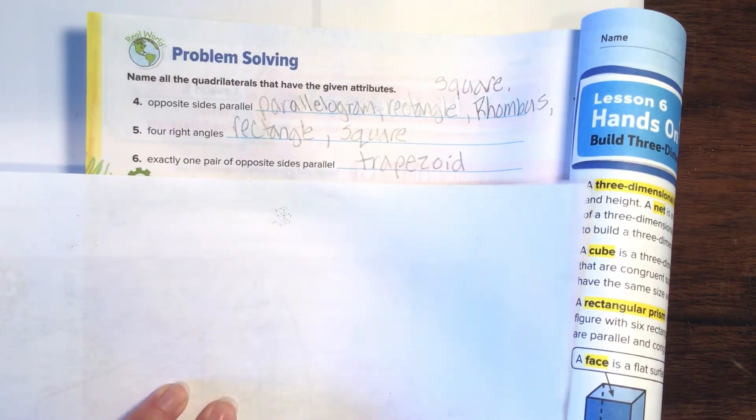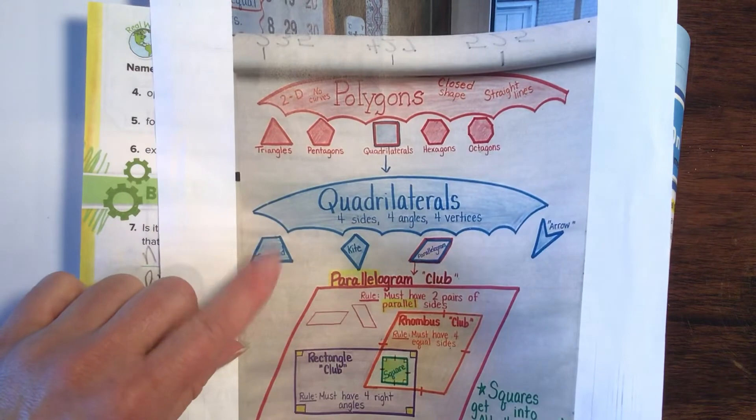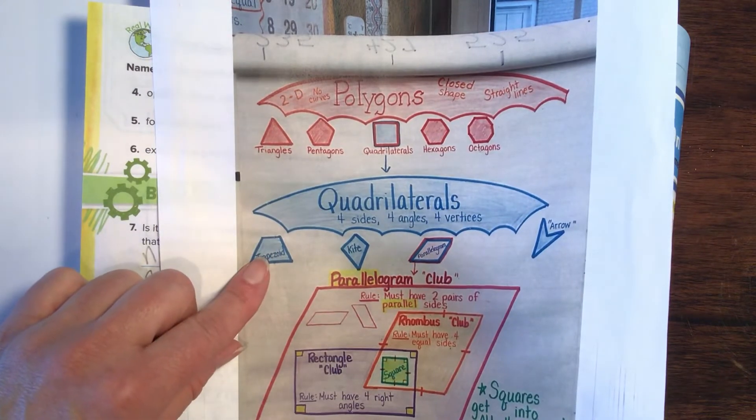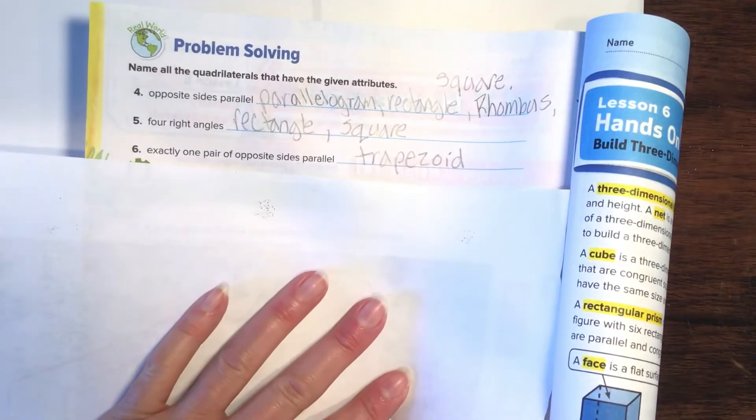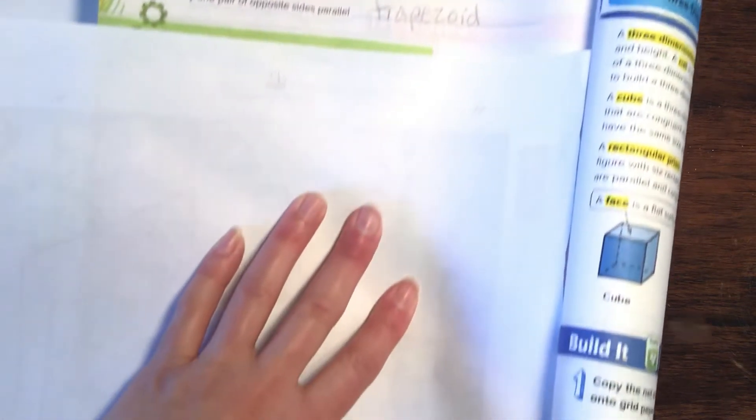Number six. Exactly one pair of opposite sides parallel. That's our fun little trapezoid. Remember, he's clear out here in outer darkness. He only has one pair of opposite sides that are parallel. Trapezoid.